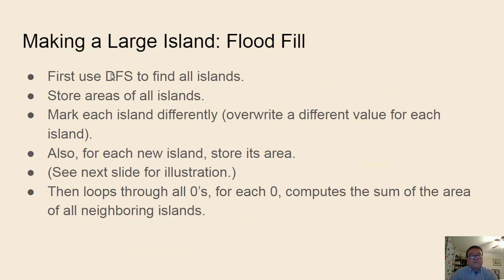Here is our algorithm. We use DFS to find out all the islands, and then we want to store the area of all the islands. At the same time, we want to mark each island differently. Because later, we are going to loop through all the zeros, and then for each zero, we are going to look at its four neighboring cells and see which islands are in those cells. Then we are going to add the area of all the neighboring islands. So we need to quickly find out which island each of the neighboring cells belongs to. We do that by changing the value of the cell to each island changed to a different number. Then by looking at the cell, we will quickly find out which island it belongs to, and we can also store the area of this new island.